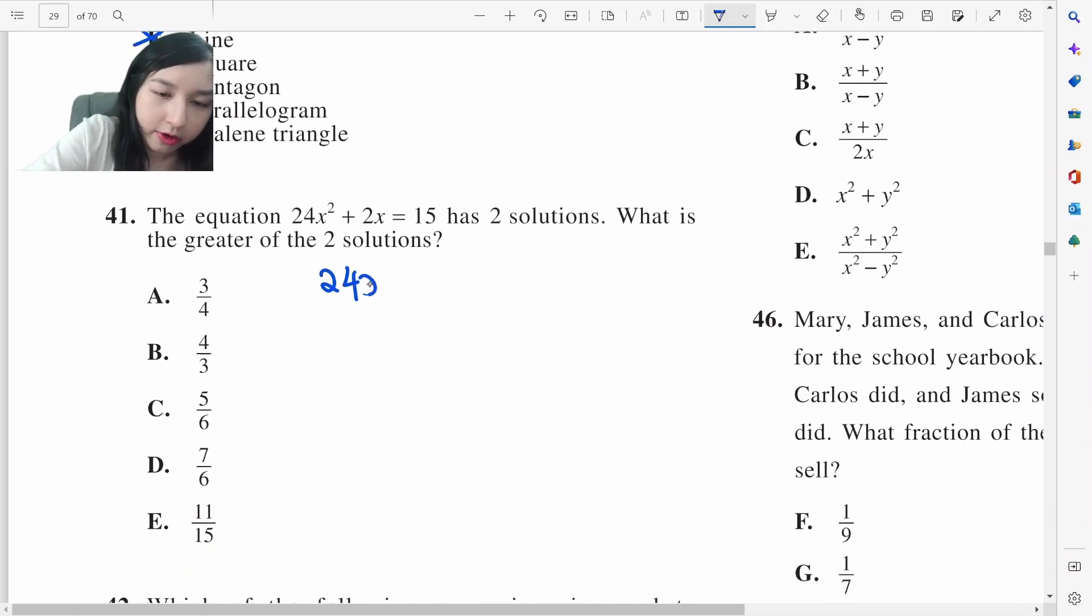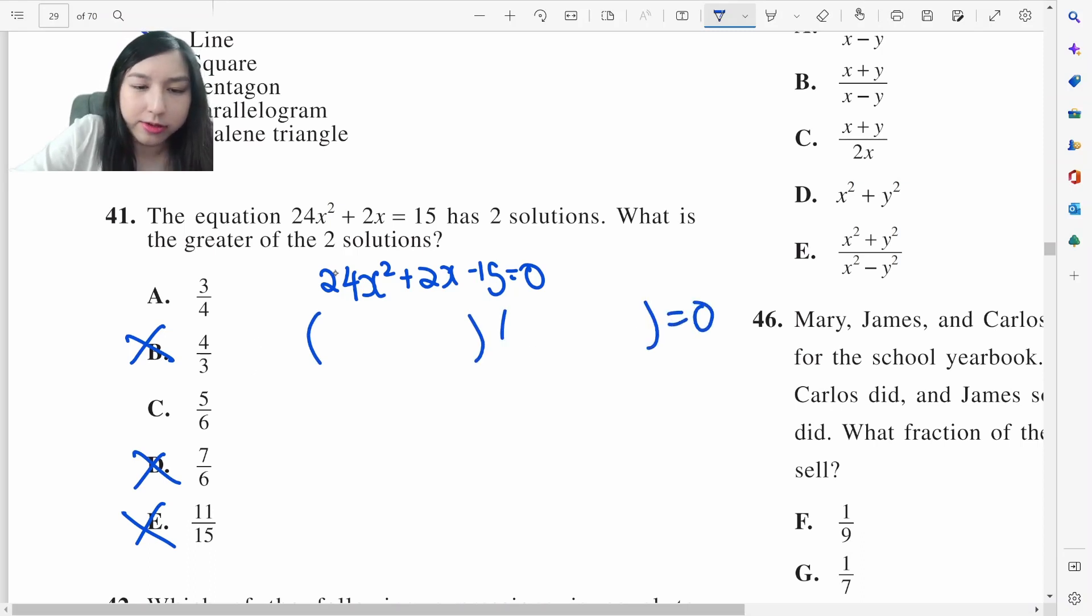We need to solve this equation. 24x squared plus 2x minus 15 equals 0. Now here's a trick for eliminating answers. If you look at the denominator, the denominator needs to be a factor of 24. So 4 is a factor, 3 is a factor, 6 and 6 are factors. 15 is not a factor of 24. We eliminate that. And do the same for the numerator. The numerator needs to be a factor of 15. 3 is a factor, 4 is not a factor of 15. 5 is a factor, 7 is not a factor. So this already eliminates my answers by a lot. I can already tell the denominators, 4 and 6, that's 24. 4x times 6x. And the numerators, 3 and 5. 4 times 5 is 20, 3 times 6 is 18. We want positive 2, so positive 5, negative 3. 3 fourths, negative 5 sixths. 3 fourths is obviously greater. It's going to be A.